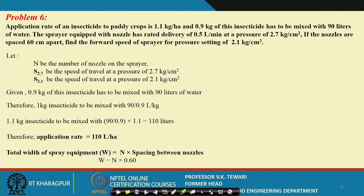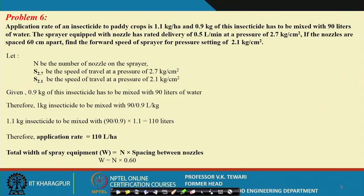Let us take another problem — problem number 6 in the series. This problem indicates that the application rate of an insecticide to paddy crop is 1.1 kg per hectare as active ingredient, and 0.9 kg of this insecticide has to be mixed with 90 liters of water. The sprayer equipped with nozzles has a rated delivery of 0.5 liter per minute at a pressure of 2.7 kg per centimeter square. If the nozzles are 50 centimeter apart, find the forward speed of the sprayer for a pressure setting of 2.1 kg per centimeter square.